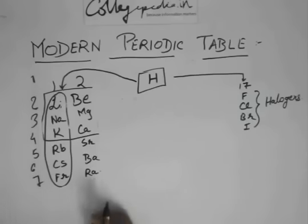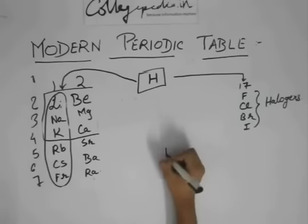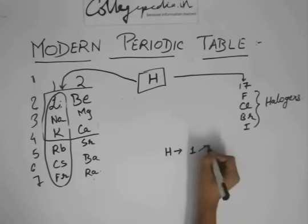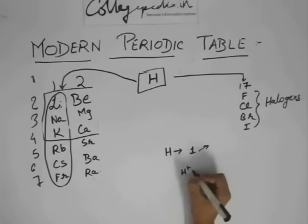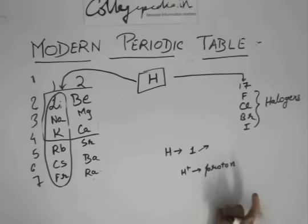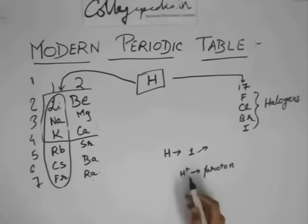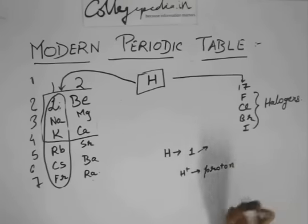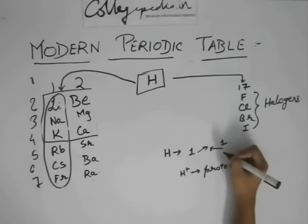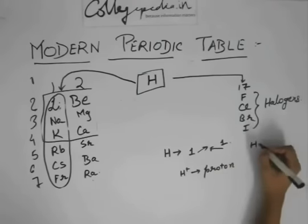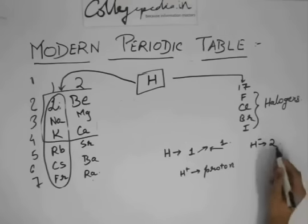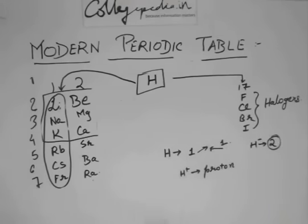Hydrogen has similar properties with Group 1 because its atomic number is 1, so its electronic configuration is also 1. It can lose this one electron and become H+, which is nothing but one proton — hydrogen does not have any neutron in its nucleus. It can also gain one electron to become H- with configuration 2, which is a stable configuration.